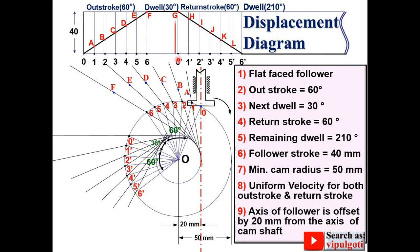Similarly you can do for the return stroke. That means transfer 0 dash g, then 1 dash h, then 2 dash i, then 3 dash j, then 4 dash k, and at last 5 dash l.